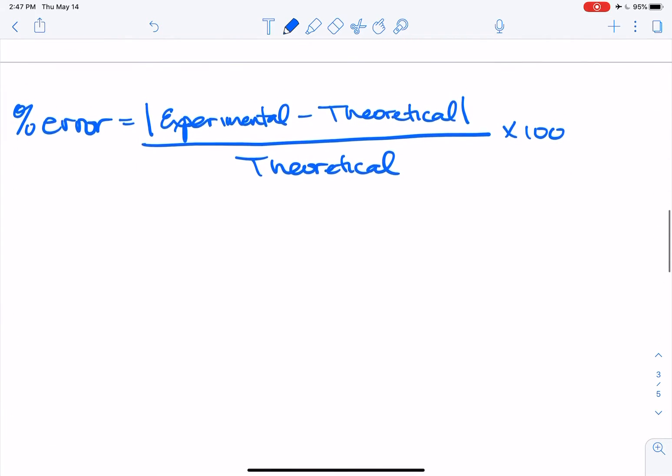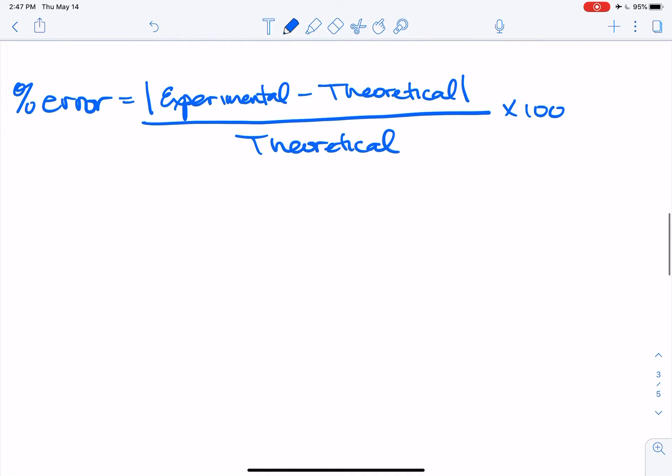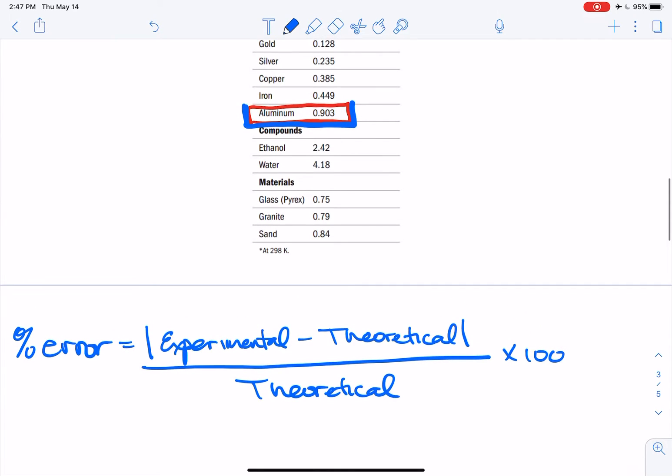So the equation for percent error is the absolute value of the experimental value minus the theoretical value, and the theoretical value is in theory what you should get. Okay, so if you looked it up in the book and it said that's what you should get, that's what the theoretical value is. In theory, the heat capacity of aluminum is 0.903.